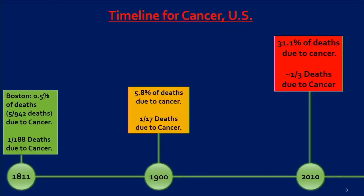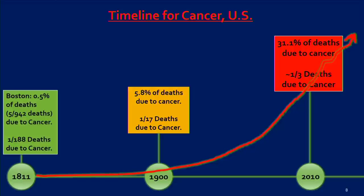Cancer: in 1811 Boston, 0.5% of deaths — five of 942 — that's one in 188 deaths due to cancer. By 1900, it's rising: 5.8% of deaths, that's one in 17. By 2010, 31.1% of deaths — that's nearly one in three again. So the increase probably looks something like this.